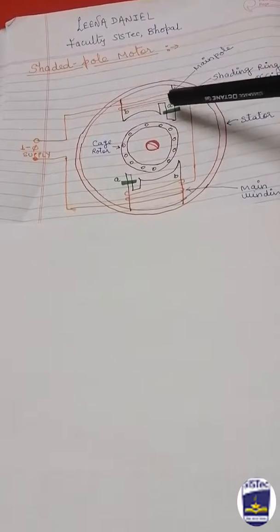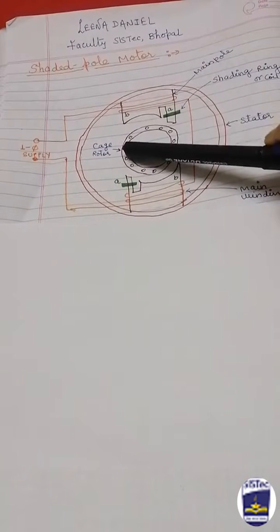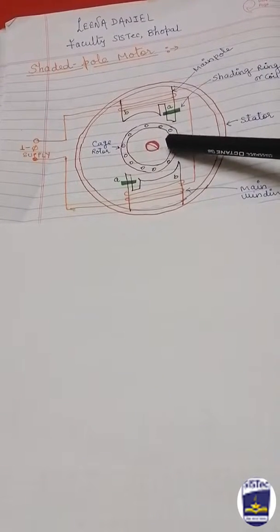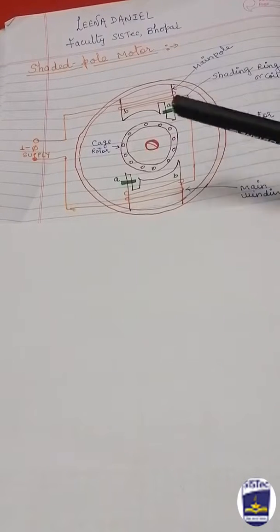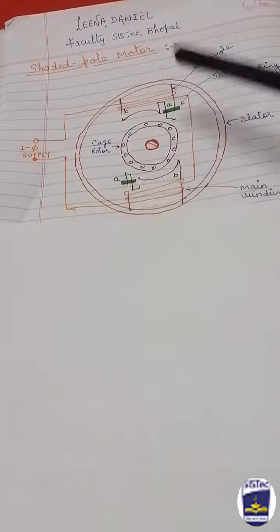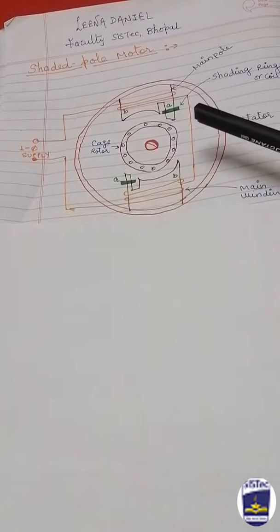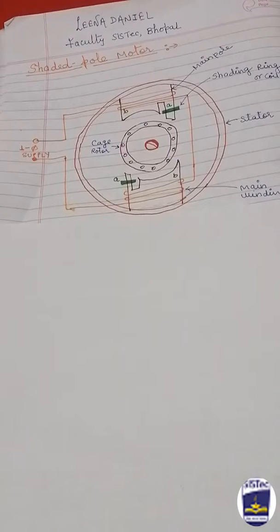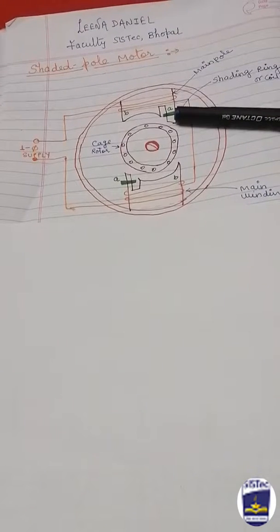At the same time, the main flux and the shaded pole flux are displaced in space. The space displacement is less than 90 degrees. Since there is a time and space displacement between the two fluxes, this condition is created by using the shading coil.